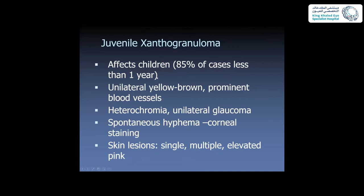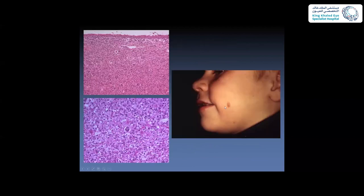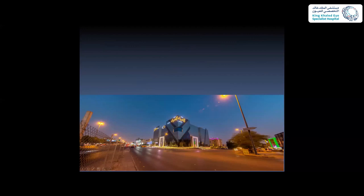Juvenile xanthogranuloma affects children in 85% of cases under one year of age, usually presenting with unilateral yellow-brown prominent blood vessels that may lead to spontaneous hyphema with corneal staining. It may also present with heterochromia and unilateral glaucoma, and can be associated with single or multiple skin lesions. Pathology shows granulomatous diffuse infiltration with lipid-containing histiocytes and two-tone giant cells.